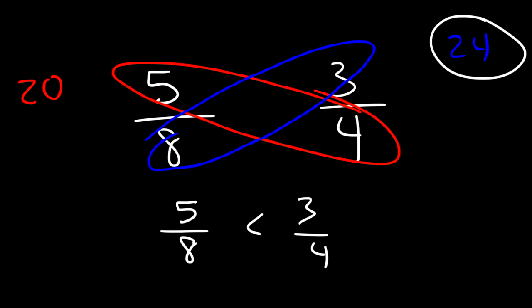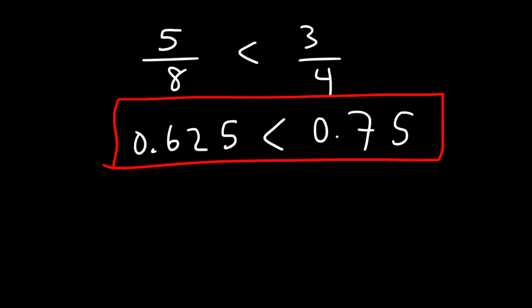Now to confirm it you can convert each fraction into a decimal. You can do this using long division or you can use your calculator. If you type in 5 divided by 8 into your calculator you should get 0.625 and if you type in 3 divided by 4 it should give you 0.75. So 0.75 is greater than 0.625. So this means that 3 over 4 is greater than 5 over 8.